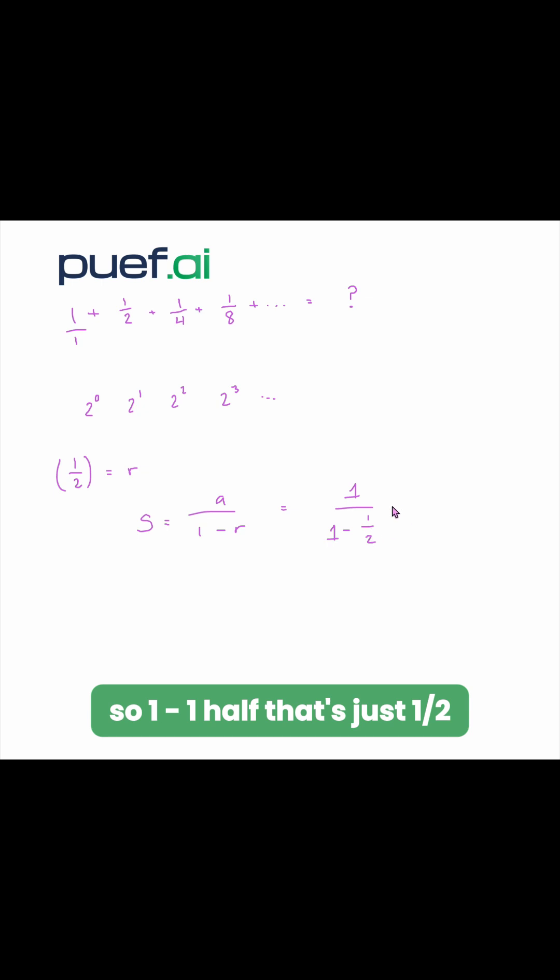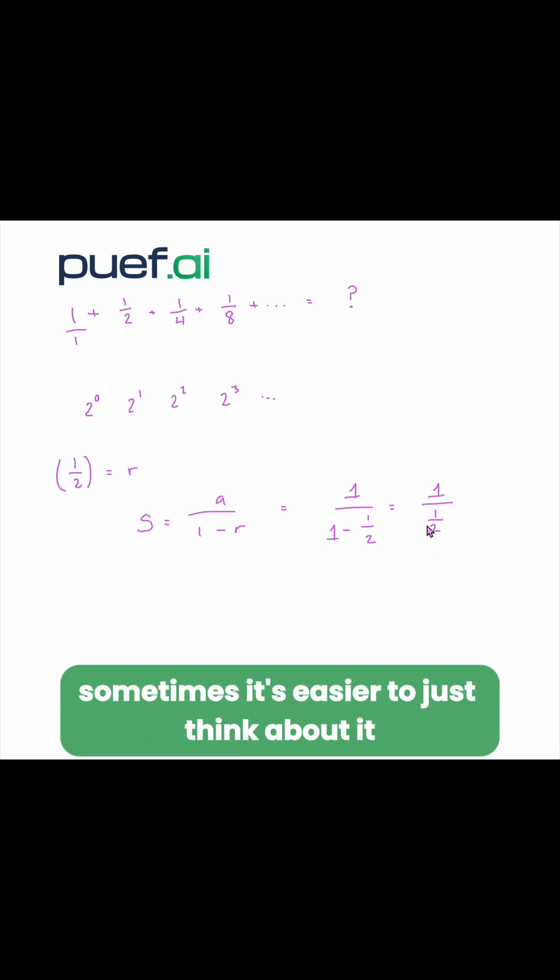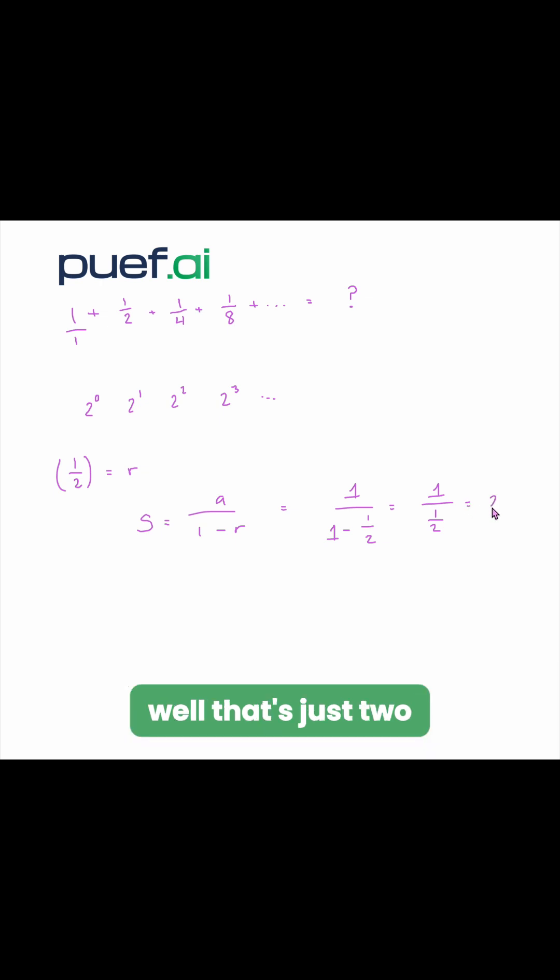So 1 minus 1 half, that's just 1 half, so we have 1 divided by 1 half, and anytime we have division, sometimes it's easier to just think about it. How many times does 1 half go into 1? Well, that's just 2, so our final answer is 2.